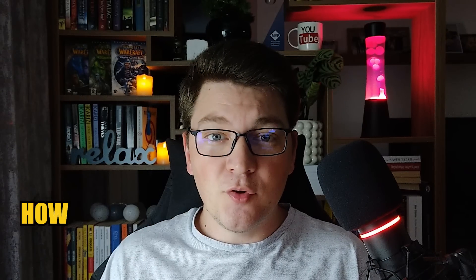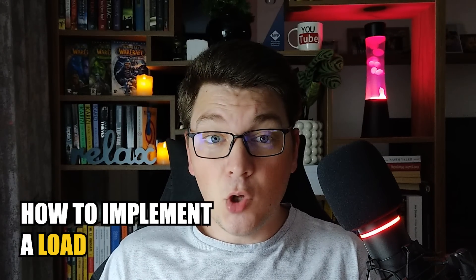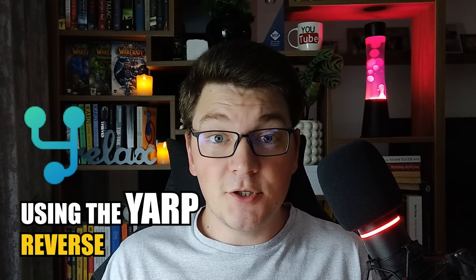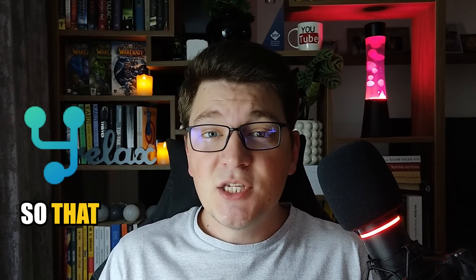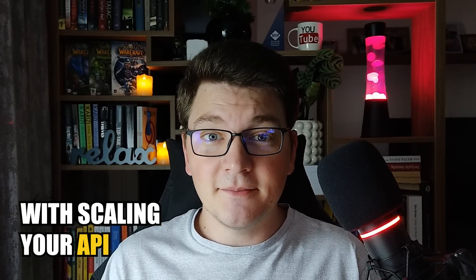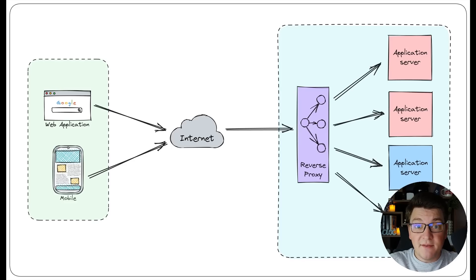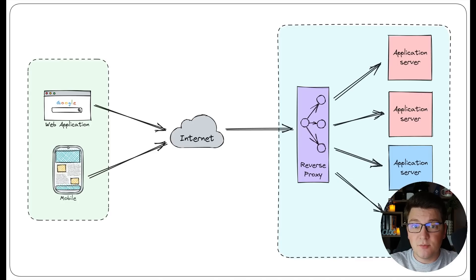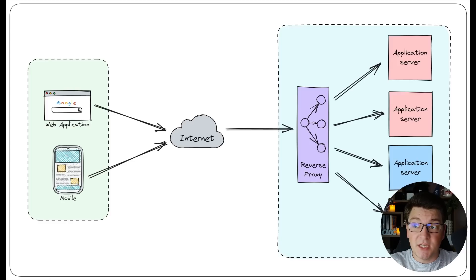In this video I'm going to show you how to implement a load balancer using the YARP reverse proxy so that you can get started with scaling your API. Before we dive into the code I want to first explain what a reverse proxy is so that you can understand why it's useful for building scalable applications.